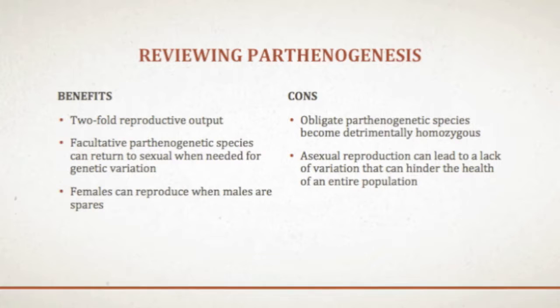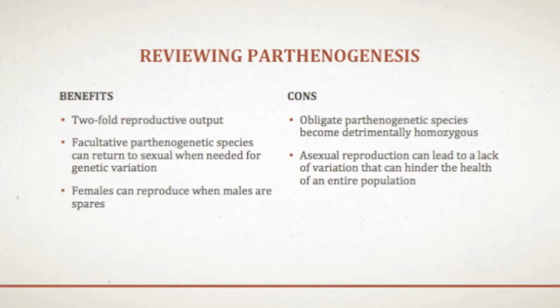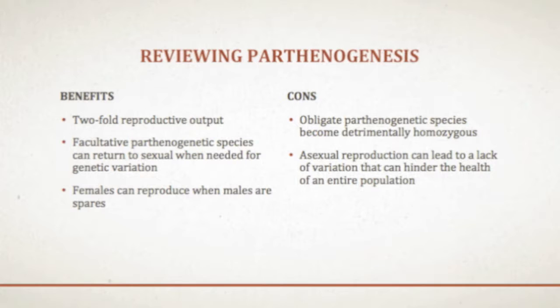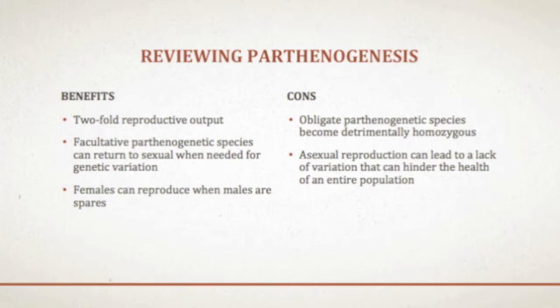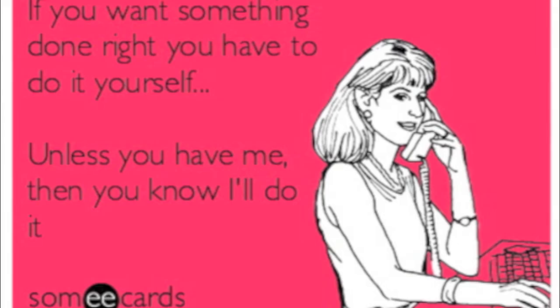When a species' only means of reproduction is through parthenogenesis or any kind of asexual reproduction, there is a possibility that offspring could become increasingly homozygous, leading to no variation. Without variation, these species could be subject to endangerment or extinction without genetic heterozygosity to stabilize stress factors such as environmental changes or disease. However, certain species which reproduce through parthenogenesis exclusively have recently been shown to have the same genetic diversity as their bisexual predecessors. Parthenogenetic reproduction shows that sometimes when a job needs to be done, you just need to do it yourself.